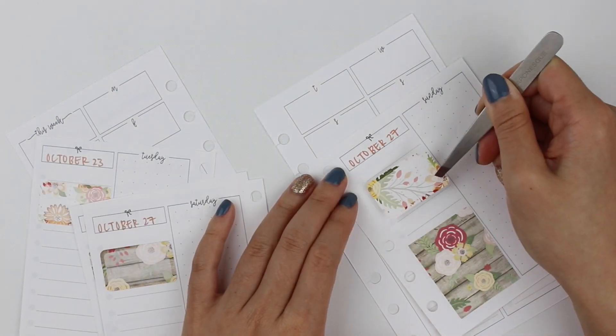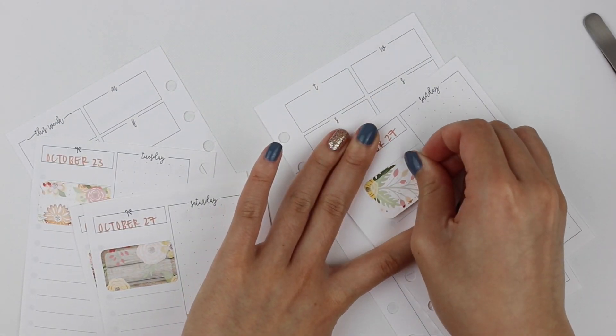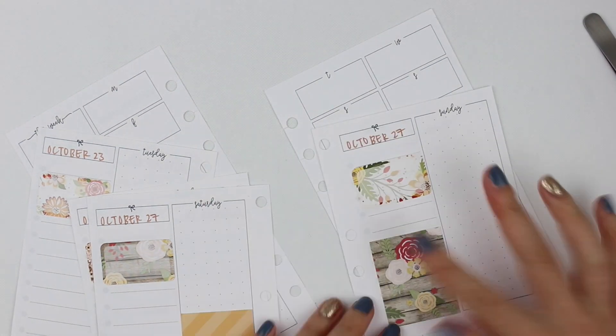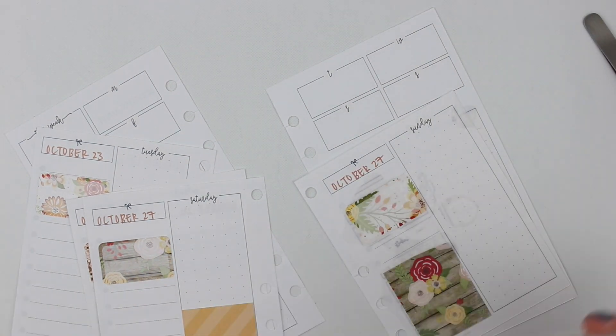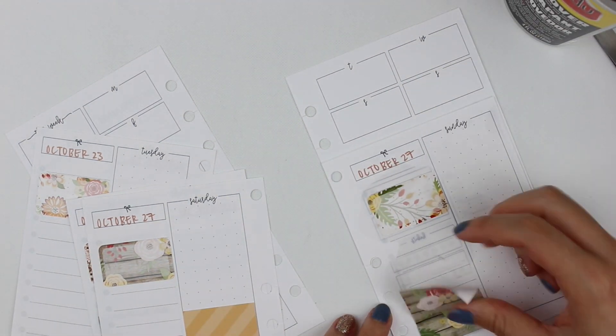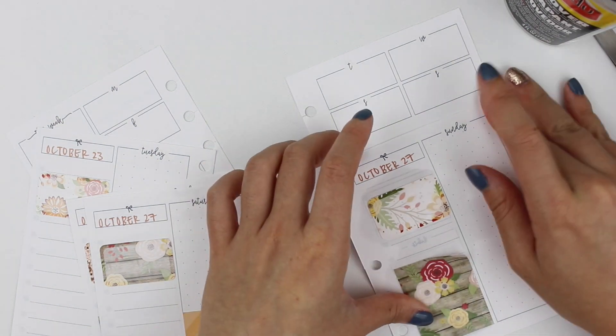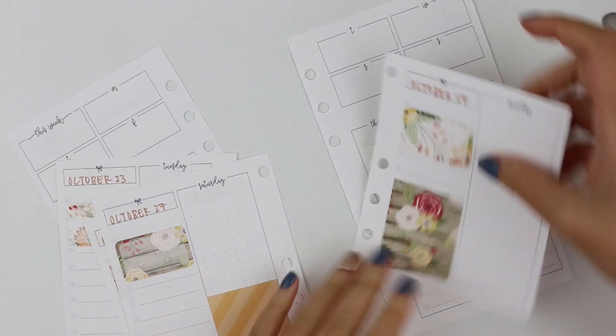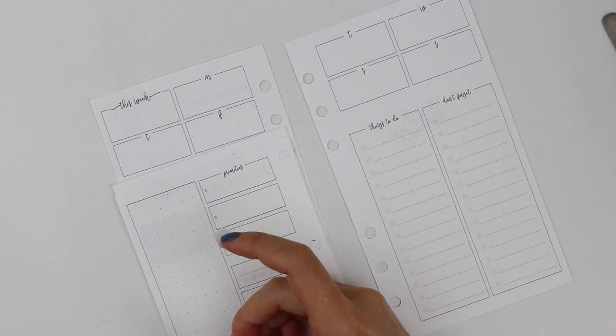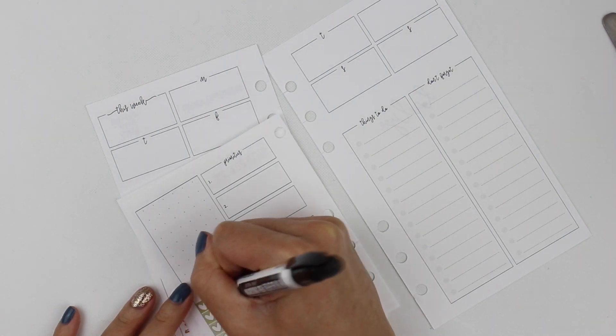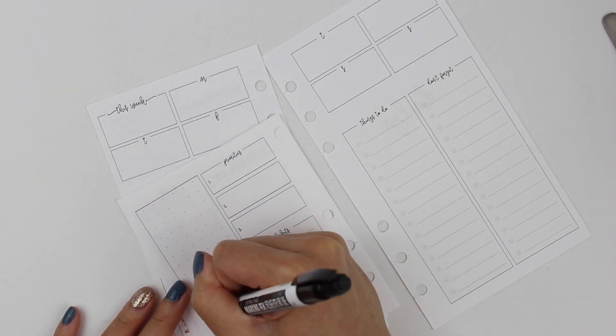So right now, I'm putting down a full box and a half box on each day. I don't really have a method to where I put it. Sometimes I'll change it up. Sometimes I'll do the same format. On Sunday here, I'm putting the full box and the half box on the same column. If I know that I have a less busy day where I don't have as many little tasks to do, then I will put the full box on the left side to cover up some of that checklist space.